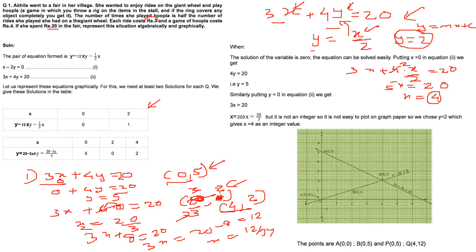Let us mark these points on the graph. The first point is (0, 5): X = 0 and Y = 5. The second point is (4, 2): X = 4 and Y = 2. Plot both points and draw a straight line through them. This is how we draw the line for 3X + 4Y = 20.